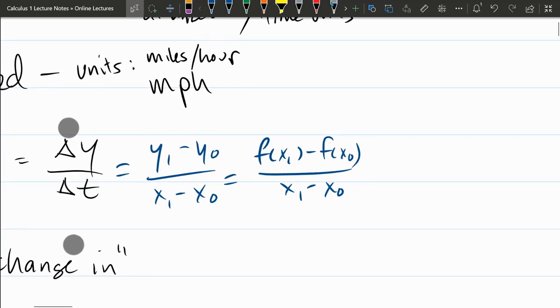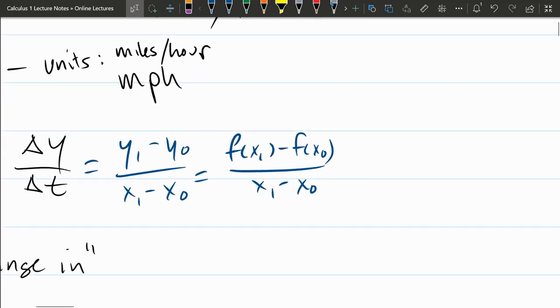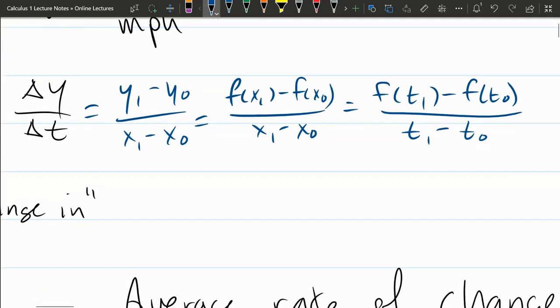I just said t and x are interchangeable, so you might see x down there. You might see t. If I rewrote it with t's, it's the same exact formula, just t's: f of t1 minus f of t0 divided by t1 minus t0. This is just the slope of a line.